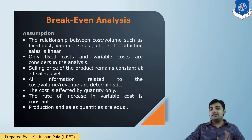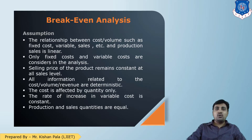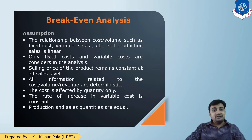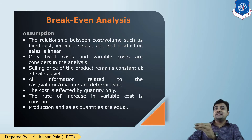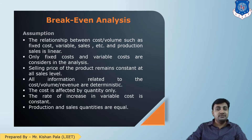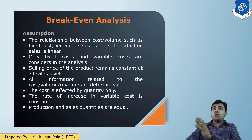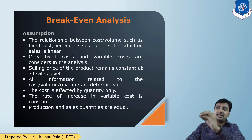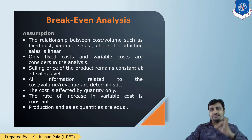The next assumption is that the selling price of the product remains constant at all sales levels. Next, all information related to cost per volume, revenue, etc. is deterministic. Next, cost is affected by quantity only, not fluctuated by the market. The rate of increase in variable cost is constant. The production and sales quantities are equal. These are the assumptions to consider when identifying the Break-Even point.